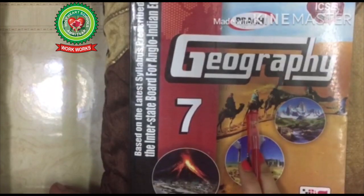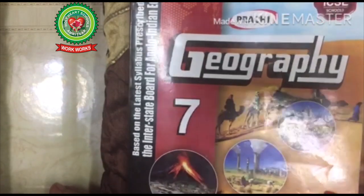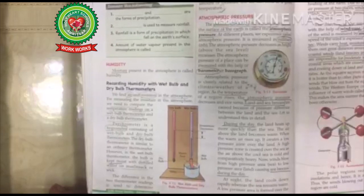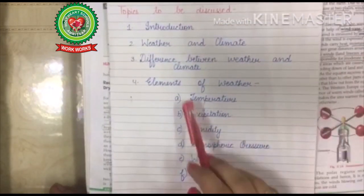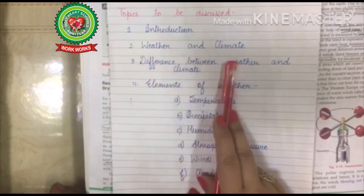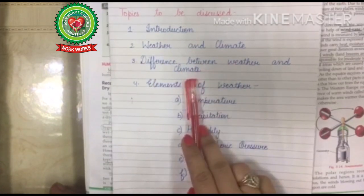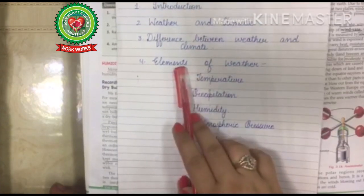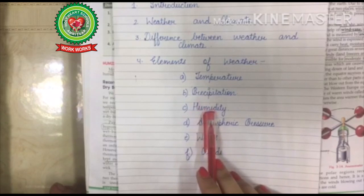Good morning students. Take out your geography book, Class 7. We were doing Lesson 3: Weather and Climate. The topics to be discussed in this lesson are: number one, introduction; number two, weather and climate; number three, difference between weather and climate; number four, elements of weather. In elements we will discuss temperature, precipitation, and humidity.